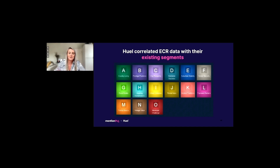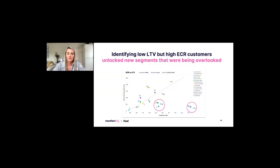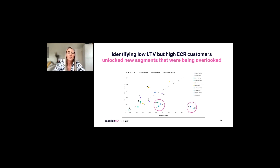To visualize this — this is quite a busy slide so I'll walk you through it. On the left-hand side, the Y-axis shows the lifetime value of those segments, and on the X-axis at the bottom you've got the ECR of those segments — ECR being lifetime value plus revenue driven from referral. Previously, Huel were prioritizing the segments with the highest lifetime value, so as you can see on screen, segments G, O, and H were the ones they were doubling down on and focusing most of their attention on.